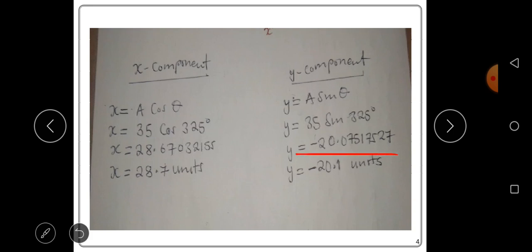This can be written in three significant figures to be negative 20.1 units. We've answered what the question required us to do.